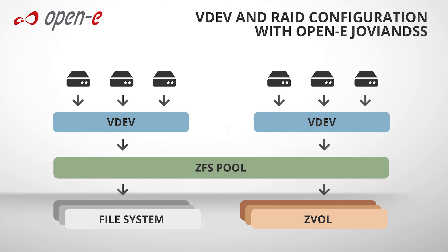For instance, creating a single group of 48 disks in RAID Z3 is not a safe configuration, as it allows only three disks to fail and might result in inferior performance.